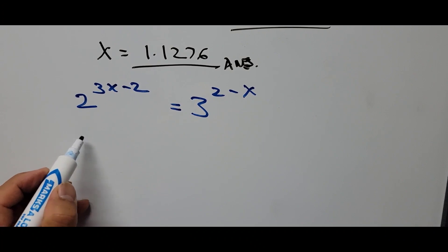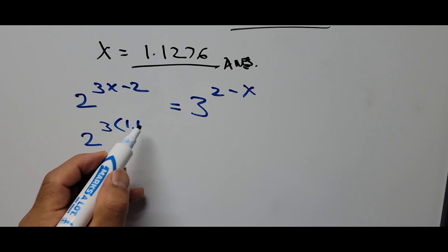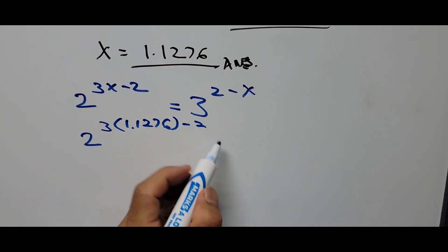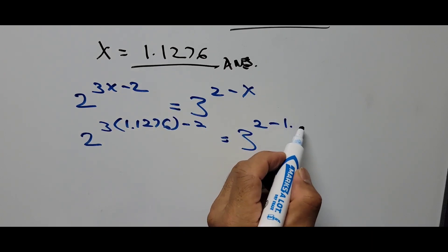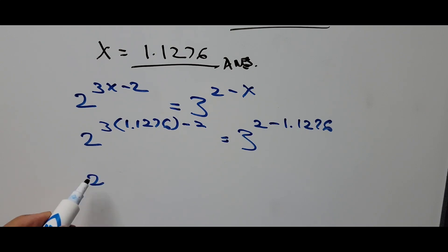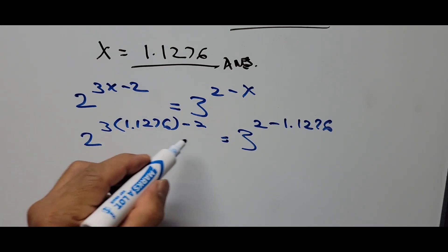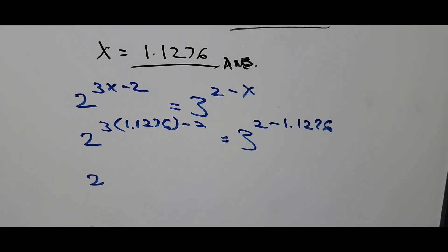We have now 2 raised to 3 times 1.1276 minus 2 equals 3 raised to 2 minus 1.1276. This is 2 raised to, 3 times 1.1276 minus 2, that will be 1.3828. And that is 3 raised to 2 minus 1.1276, that will be 3 raised to 0.8724.